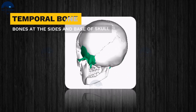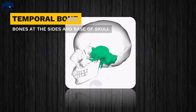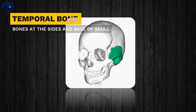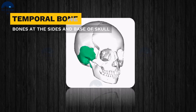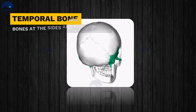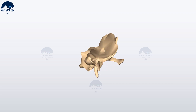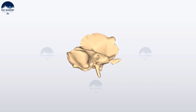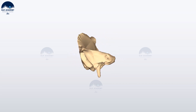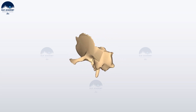Temporal bones. There are two temporal bones situated at the sides and base of the skull. They house the structures of the ears.